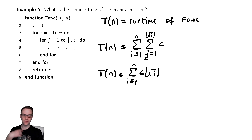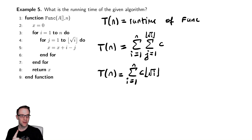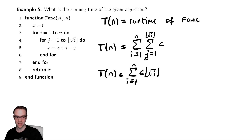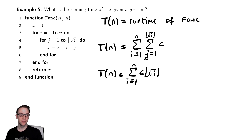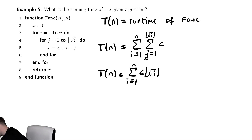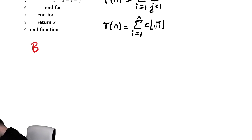Even if the floor function wasn't there, we would still need to bound this. There is no formula for radical i, so this one we have to bound above and below. Before, we were choosing to do that because it turned out to be easier. So we're going to have to bound this above and below.